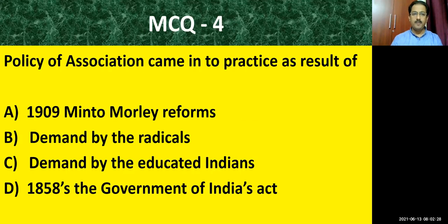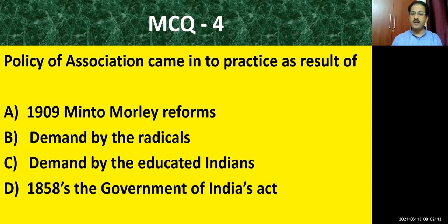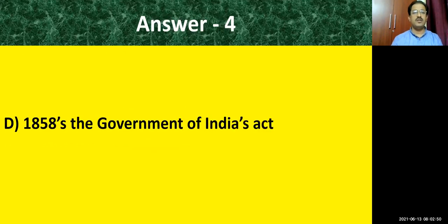MCQ question number four: policy of association came into practice as a result of — options are: 1909 Minto-Morley reforms; demand by the radicals; demand by the educated Indians; 1858's Government of India Act. The correct answer is: the policy of association came into practice as a result of the 1858's Government of India Act.